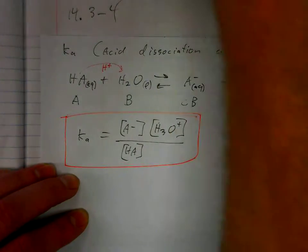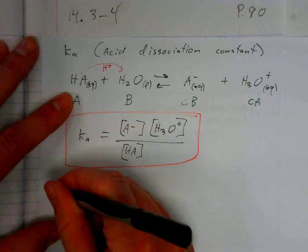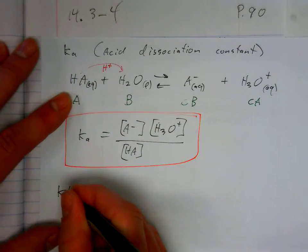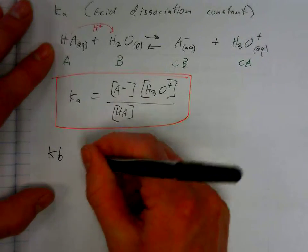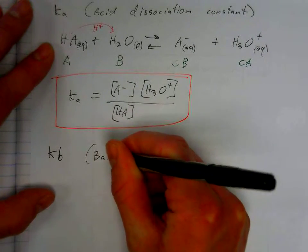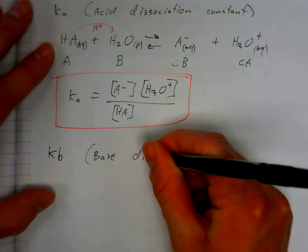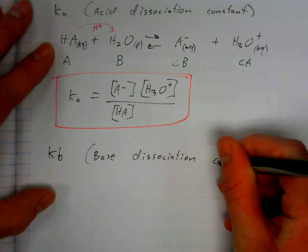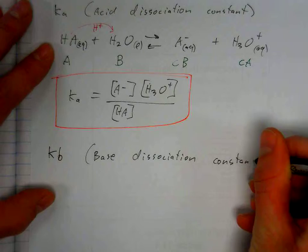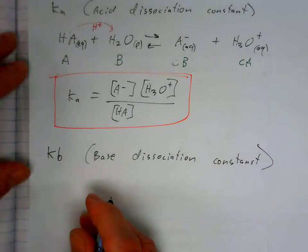Now, let's do the one for bases as well. We'll call that Kb. So this is the base dissociation constant, and we'll write the expression for that.